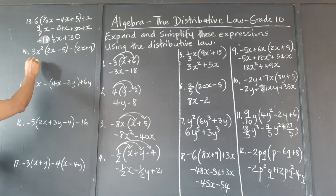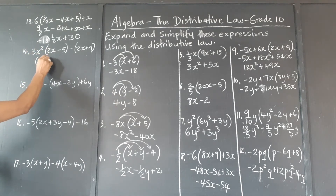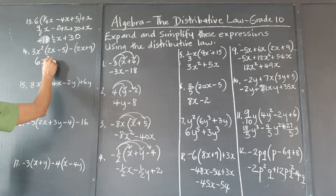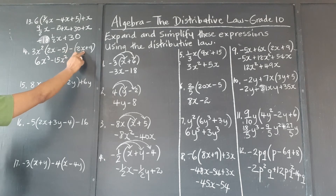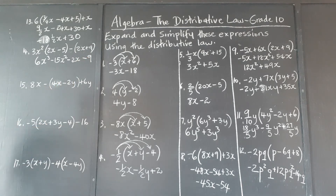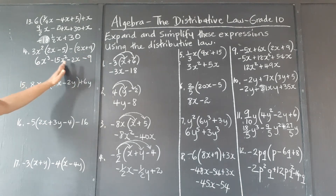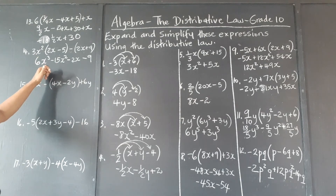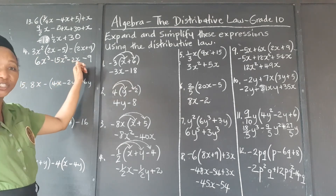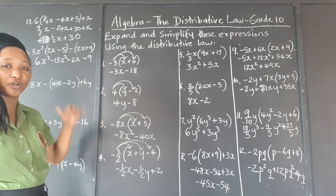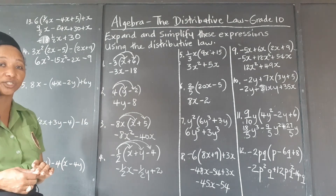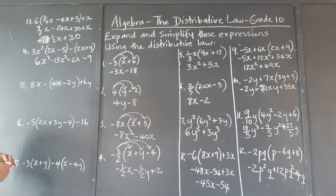3x squared times 2 is 6; x squared times x is x cubed because we're adding the indices. 3 times negative 5 is negative 15x squared. Negative times 2x is negative 2x. Negative times 9 is negative 9. These are all different terms — x cubed, x squared, x, and a constant — so there's nothing we can do in terms of addition and subtraction. This is as simple as it gets.